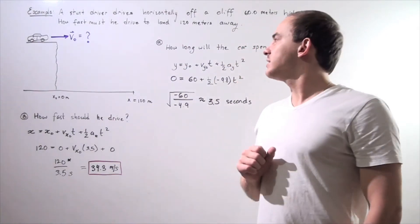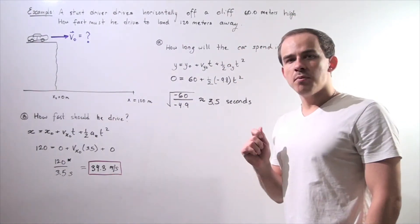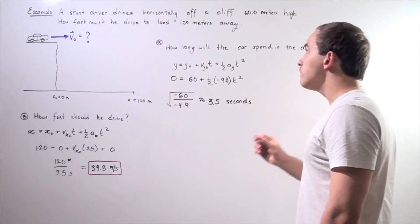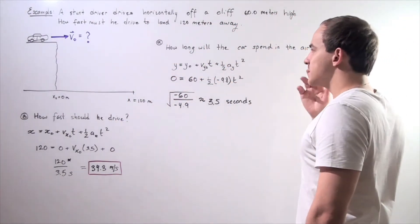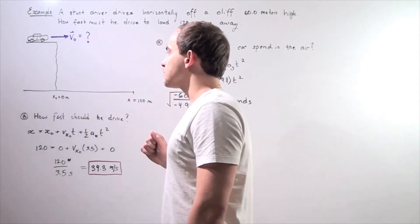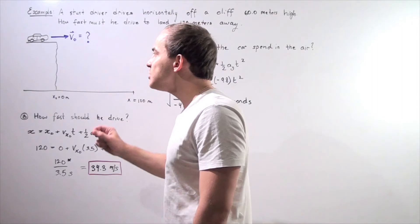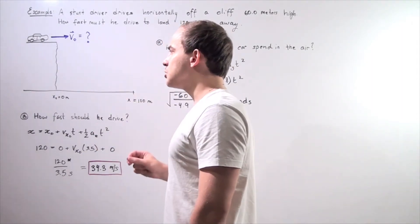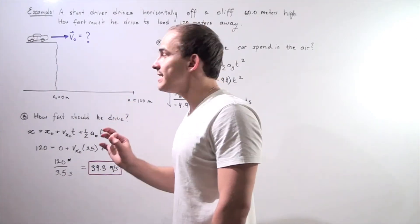So let's look at the following projectile motion example. Let's suppose that a stunt driver drives horizontally off a cliff 60 meters high. So the height of the cliff is 60 meters. So we set our initial position along the y-axis to be 60, and our final position along the y-axis is 0.